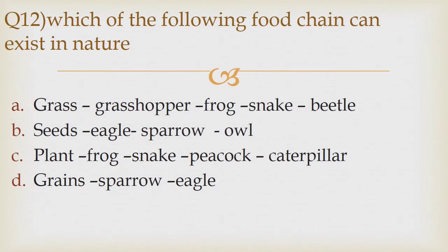Question number 12. Which of the following food chain can exist in nature? Option A: Grass, Grasshopper, Frog, Snake, Beetle. Option B: Seals, Eagle, Sparrow, Owl.